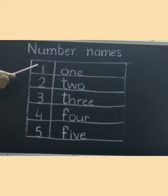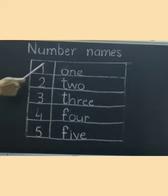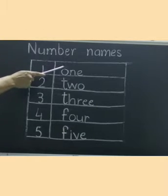In the first column, numbers are written. In the second column, number names are there. Okay?